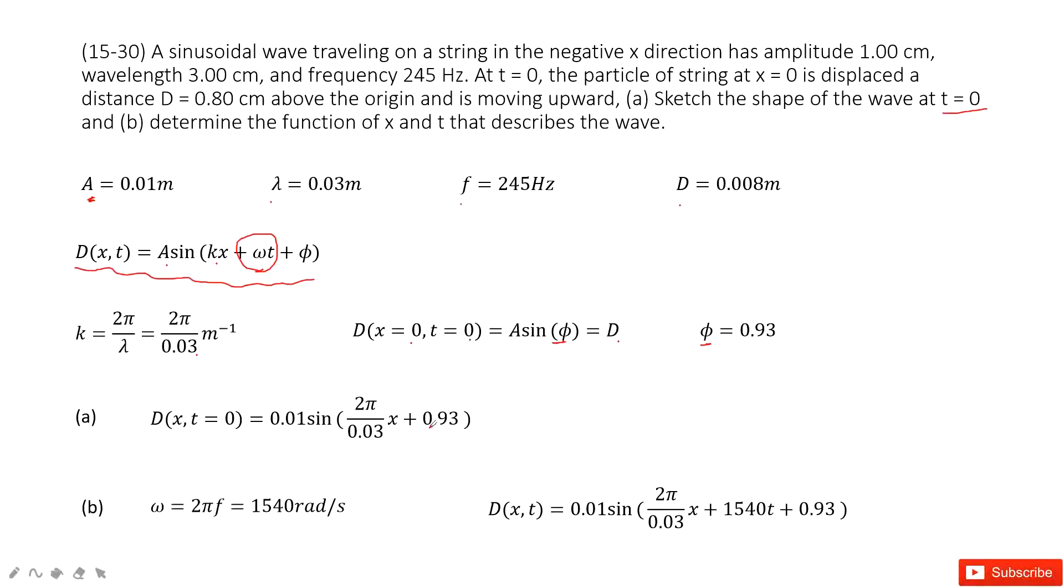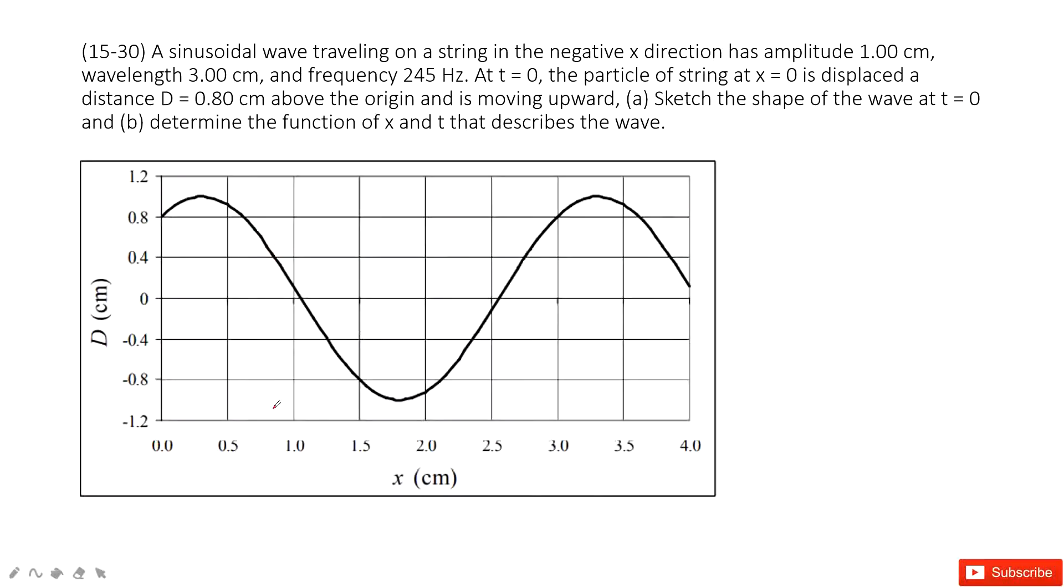Now we input the a, k, and phi phase shift inside the vector function, looks like this one. This is the wave function at t equal to 0. And then we need to plot this picture. So it is easy.